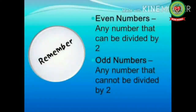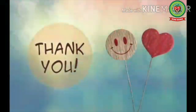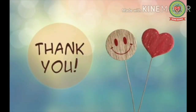Let's recall: even numbers are any numbers that can be divided by two — the numbers that come in the table of two. Odd numbers are numbers that cannot be divided by two — they never come in the table of two. I hope the topic is clear. Now I want you to do the sums given in your homework. Thank you class, stay safe, stay happy, bye bye!